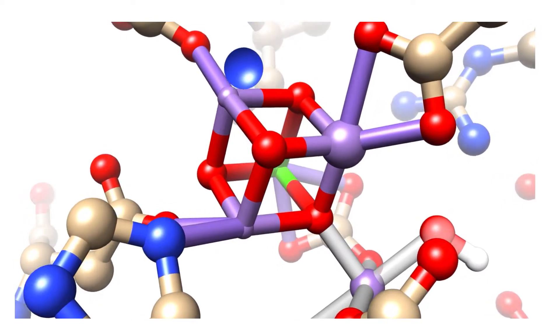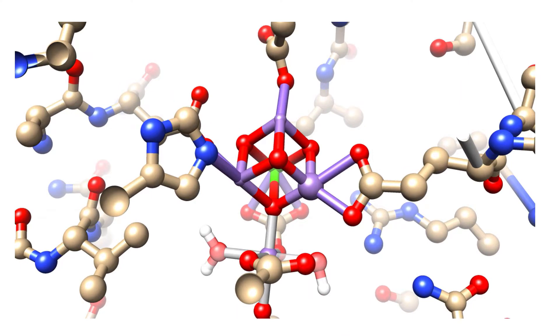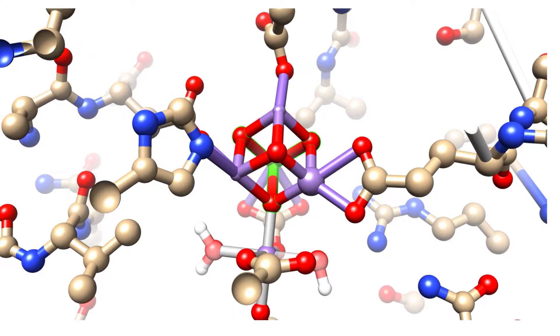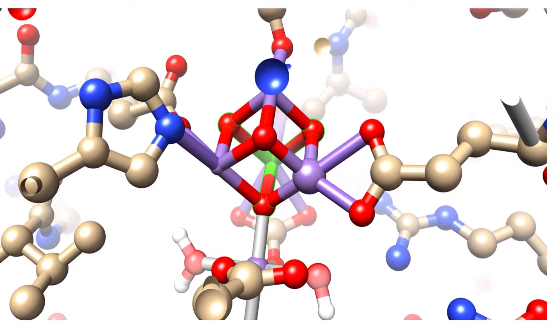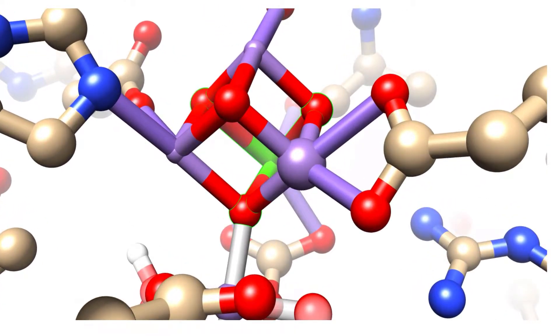Now we are looking at the manganese 3 ion. It is still part of the cube and contains glutamic acid as a ligand, which is 2 coordinated as you can see. There are also 3 oxygens coordinated, which are part of the cube, and there is also a possible water present.